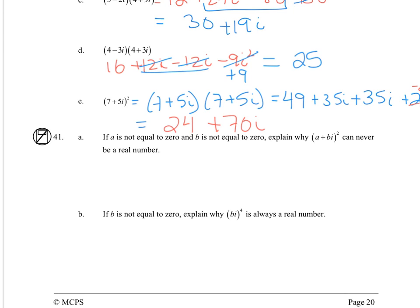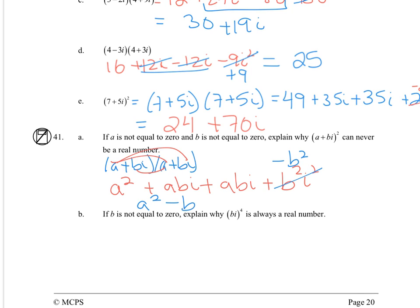So for 41a, explain why (a + bi)² can never be a real number. So if we multiply those together, a times a, a times bi, a times bi, and then b²i². So this becomes -b². So when I multiply together, I'm always going to have this imaginary component. So therefore, it is never a real number.